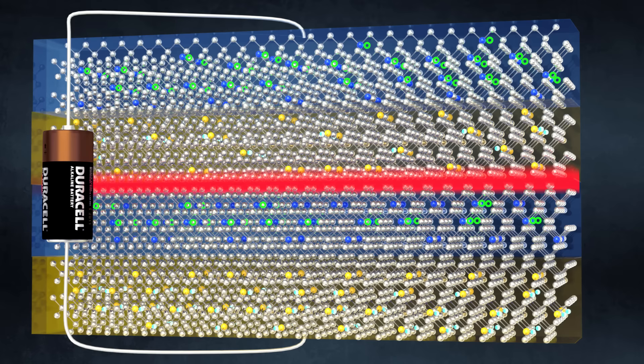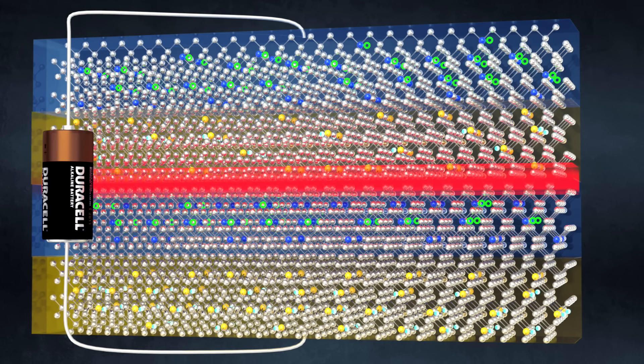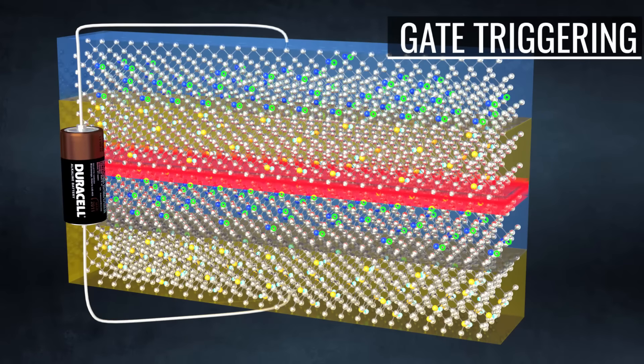In order to make the thyristor conduct, we have to break this depletion region. In thyristors, an efficient and popular method called gate triggering is used for this. Gate triggering is the process of the injection of electrons.